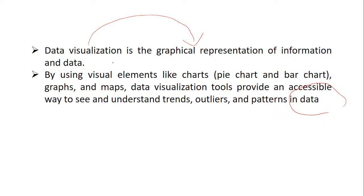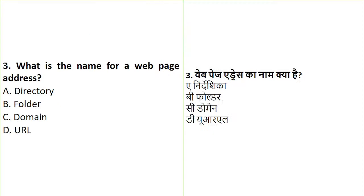Data visualization tools provide an accessible way to understand trends, outliers, and patterns of data. You can also use the term data interpretation. Question number three: What will be the name for the web page address? Is it called a directory, a folder, a domain, or a URL? Very easy questions — I will be happy if we have 20 out of 20 today.